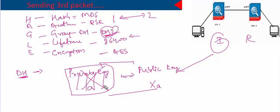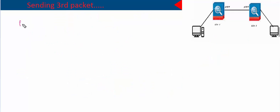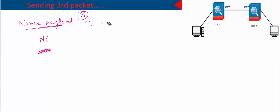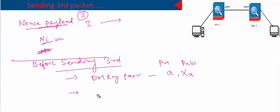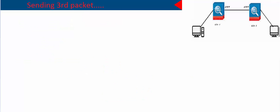Before sending the third message, the initiator has calculated the Diffie-Hellman key pair, which includes a private key and a public key. Then they calculate nonce payloads — the initiator calculates the initiator nonce, and the responder calculates the responder nonce. Since this is the third packet sent from the initiator to the responder, it will only have the initiator nonce value. Now we have all the information needed to send the third packet.